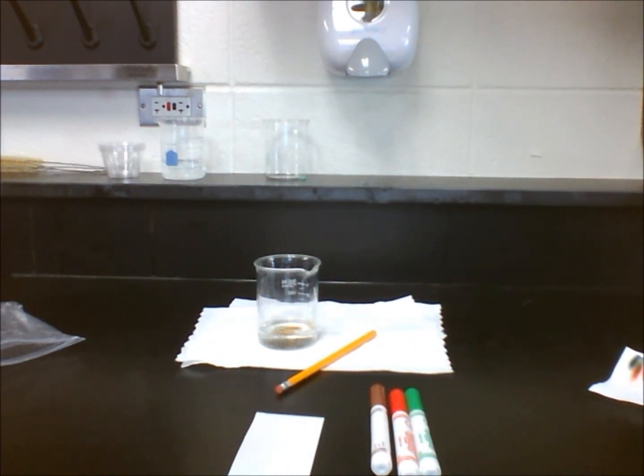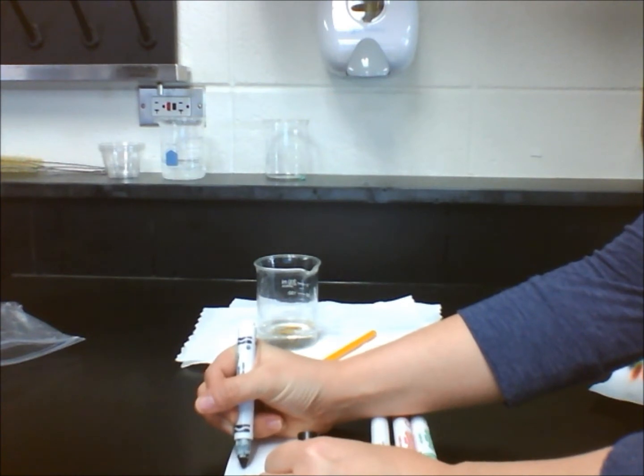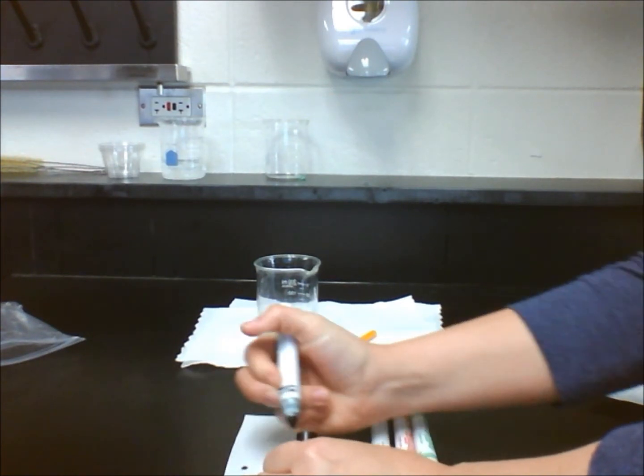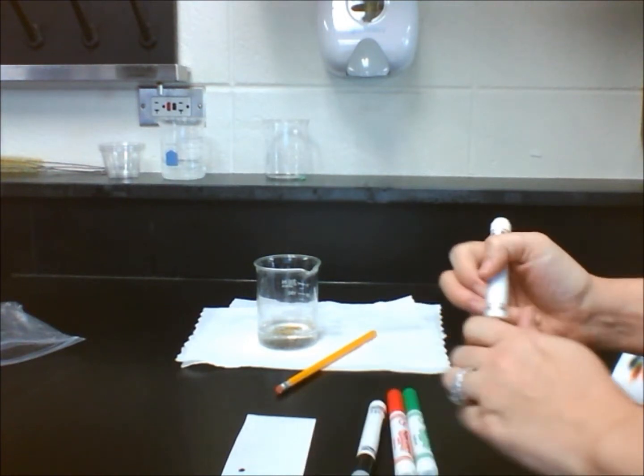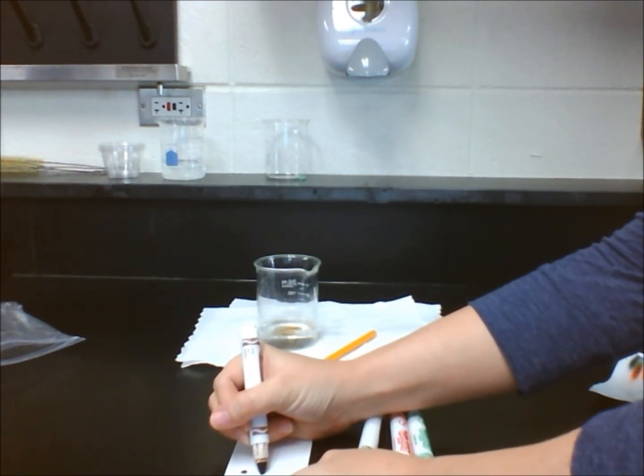Step 1: Pour 50 milliliters of water into a beaker. Step 2: Place a spot of green ink, red ink, black, and brown ink about 2 millimeters in diameter on a piece of chromatography paper one inch from the bottom.